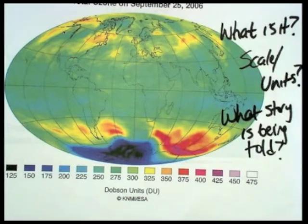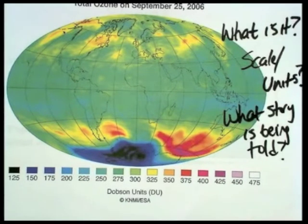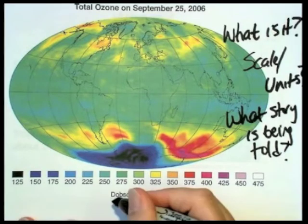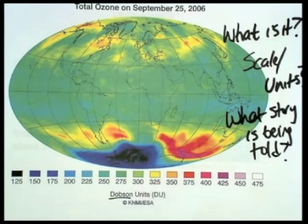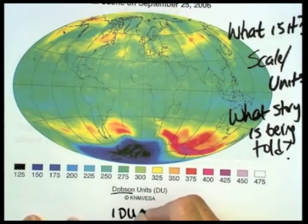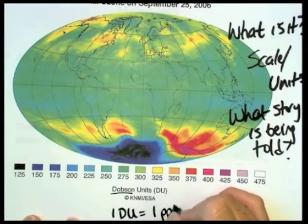And what this unit is, the Dobson unit, that's a unit used to describe the concentration of ozone. And the person who came up with this way to measure ozone, his last name was Dobson. That's why they call it the Dobson unit. It's just because somebody came up with a scale, a relative scale, to express the concentration of ozone. And as it turns out, one Dobson unit equals one part per billion ozone.